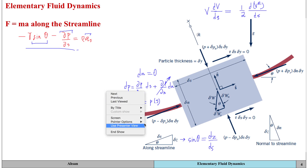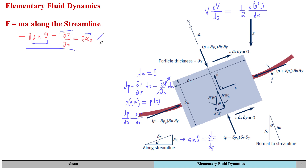From the previous video we had arrived at this equation, and after that we had basically tried to simplify it. Those simplifications involved sine of theta, how we can write partial p by partial s as dp/ds, and how we can simplify the streamwise acceleration component by inputting this into the right-hand side of the equation.